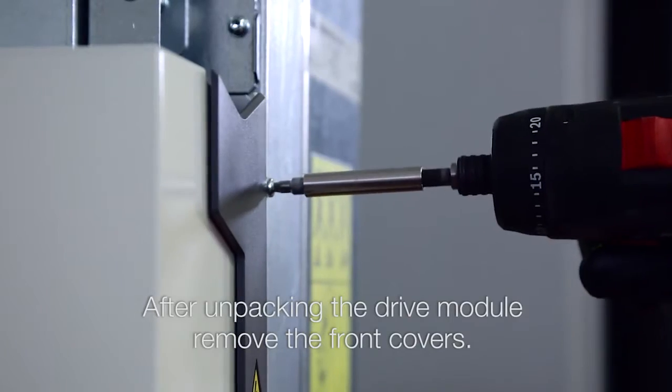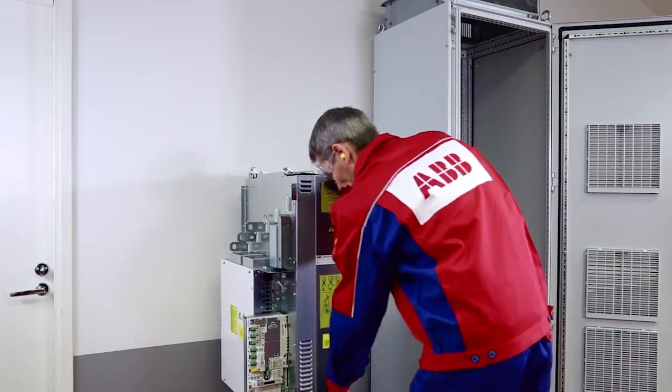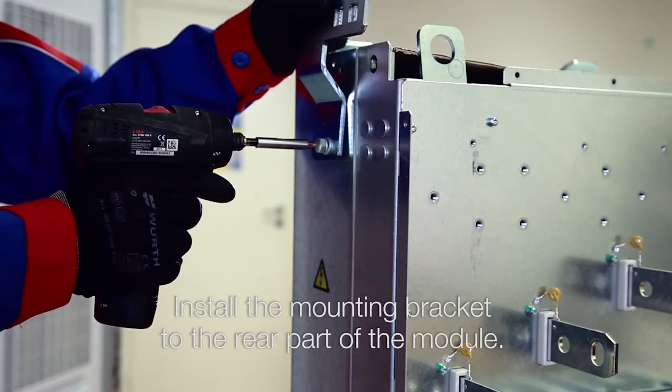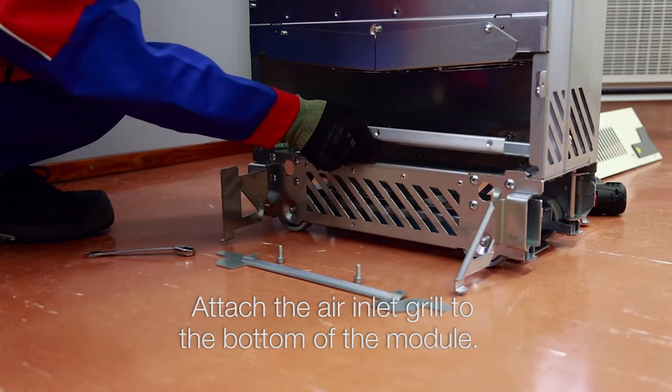After unpacking the drive module, remove the front covers. Install the mounting bracket to the rear part of the module. Attach the air inlet grill to the bottom of the module.